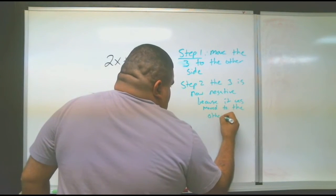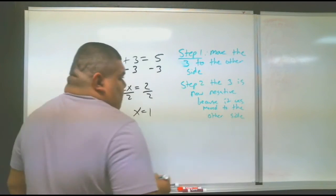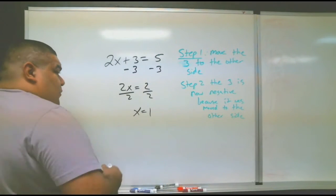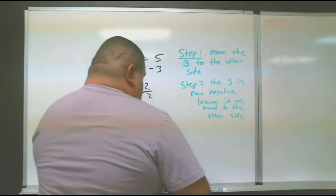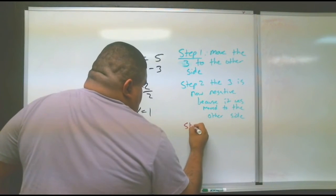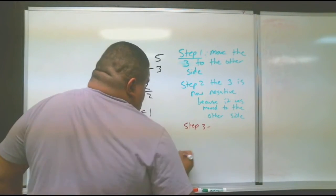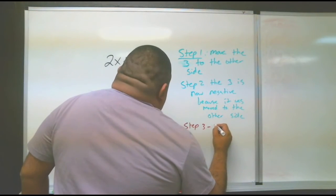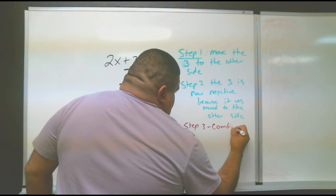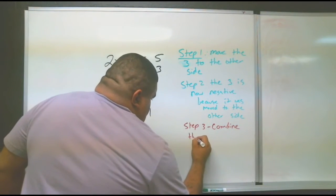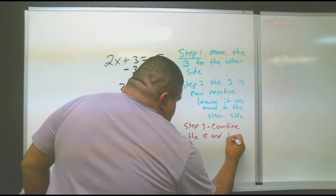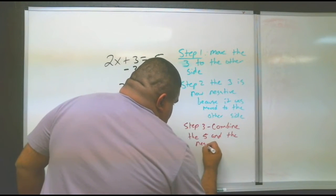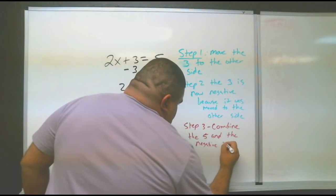Step two: the 3 is now negative because it was moved to the other side. Step three: combine the 5 and the negative 3.